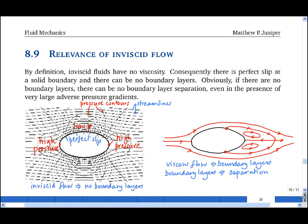And this separation causes a low pressure region behind the body, and this low pressure region is the cause of the drag that we observe in experiments, and which resolves D'Alembert's paradox.